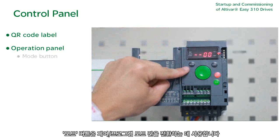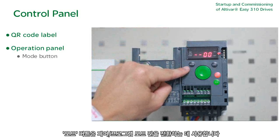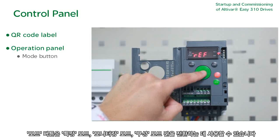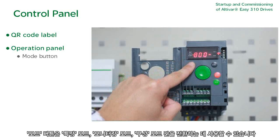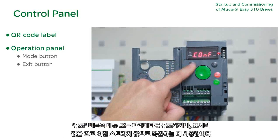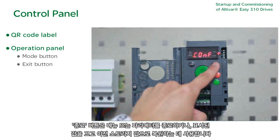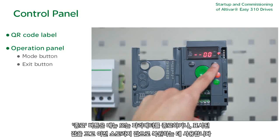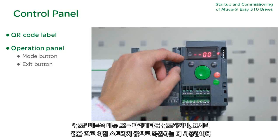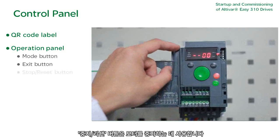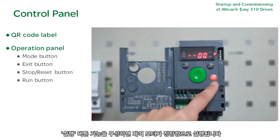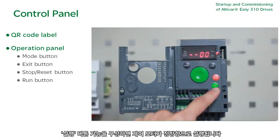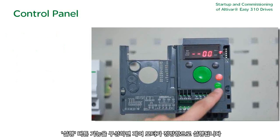The Mode button toggles between control and programming modes. It can also switch between reference, monitor, and configuration modes. The Exit button is used to exit a menu or parameters, or discard the displayed value to restore previous stored values. The Stop/Reset button stops the motor. The Run button, if configured, controls forward operation of the motor.